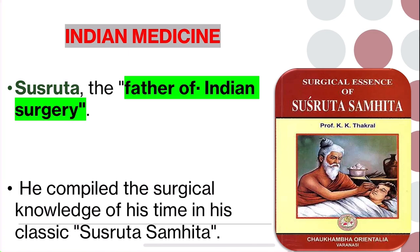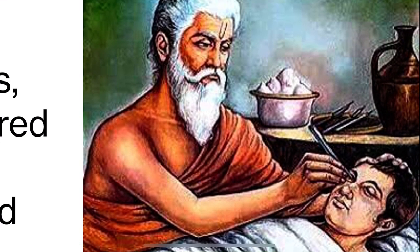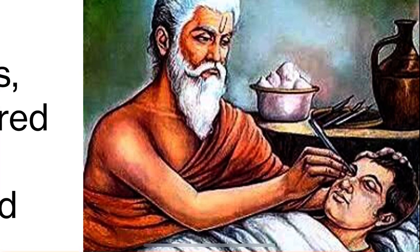Another important figure is Sushruta — he is the father of Indian surgery. He compiled the surgical knowledge of his time in his book called Sushruta Samhita. The Indians set fractures, performed amputations, excised tumours, repaired hernias, and excelled in surgery, performing operations such as cataract surgery and rhinoplasty — plastic surgeries. These rhinoplasty surgeries were well practiced by ancient Indians, and the British who later came to India learned about rhinoplasty from them.